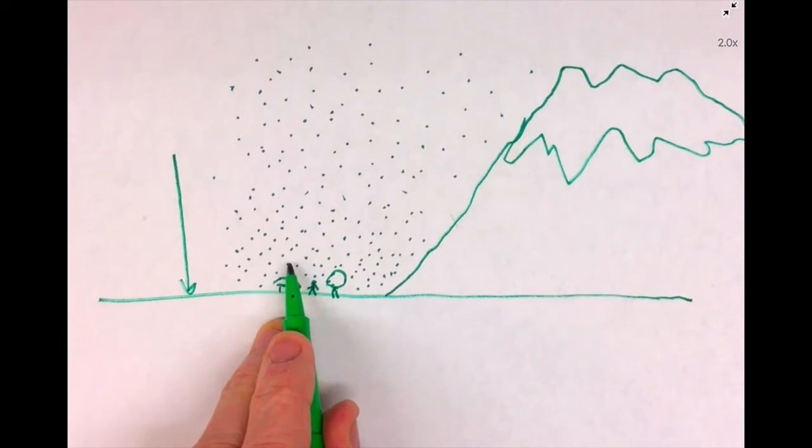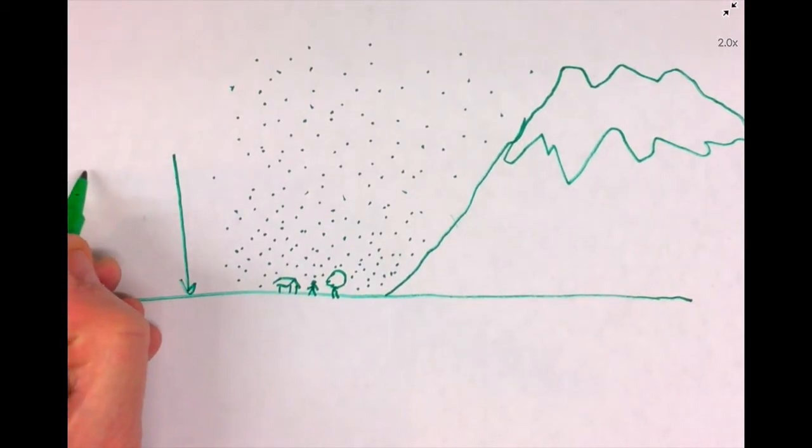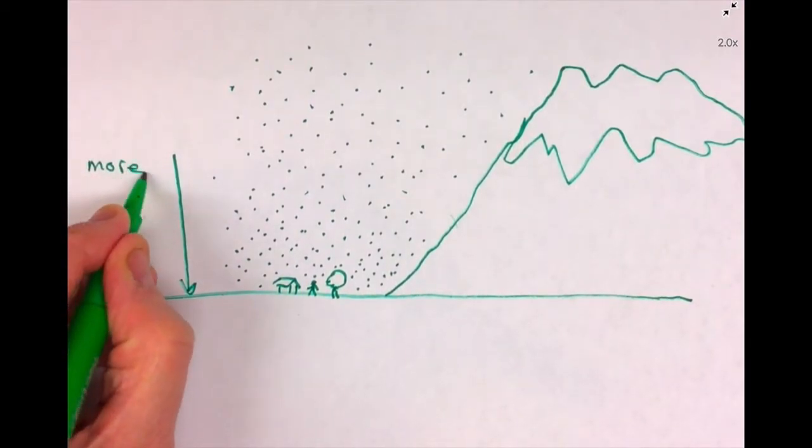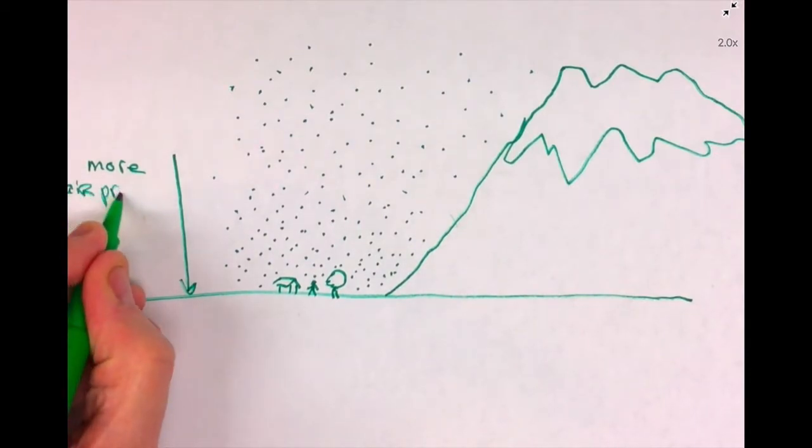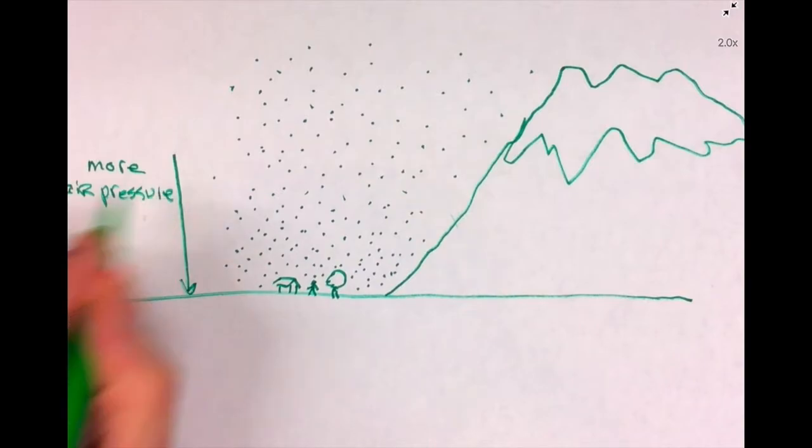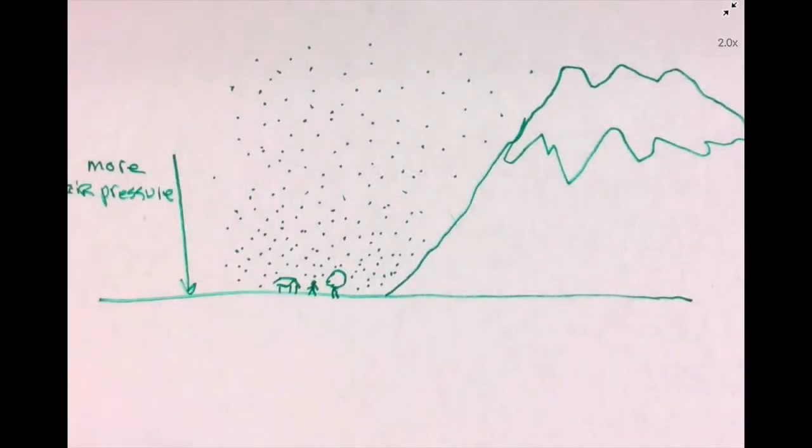So what we're going to draw then is a little scale here. As you go down in altitude, what happens is you have more air pressure and higher density of the air. It's a higher density of the air.